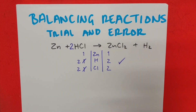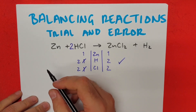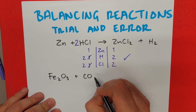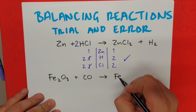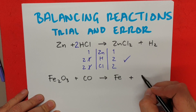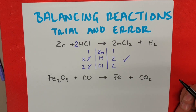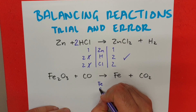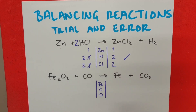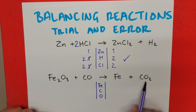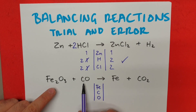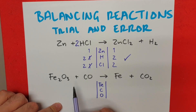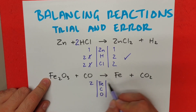Let's try another reaction — iron two oxide that reacts with carbon monoxide to produce iron and carbon dioxide gas. We write our little inventory again. We have iron on both sides, carbon, and oxygen. This is quite interesting because we only have oxygen in one compound on the reactant side, but on the product side the oxygen is split between two compounds. We have two iron on this side and one iron on the other.